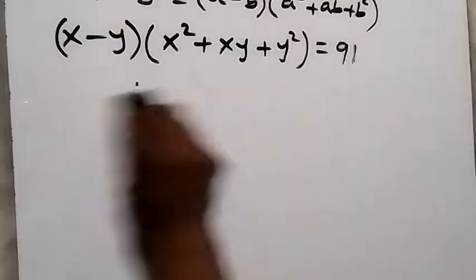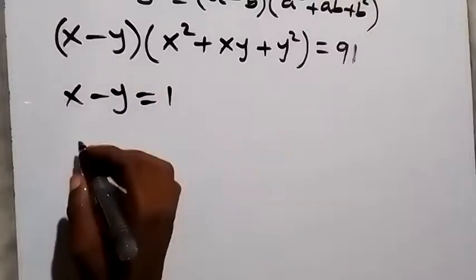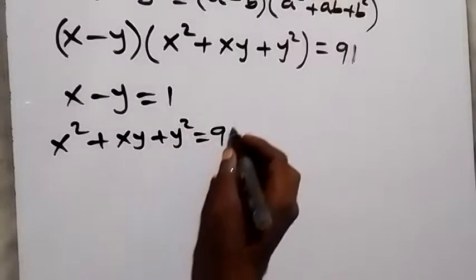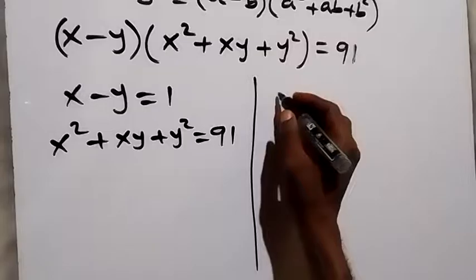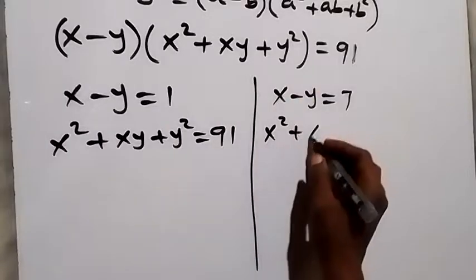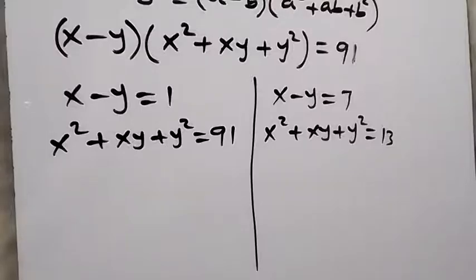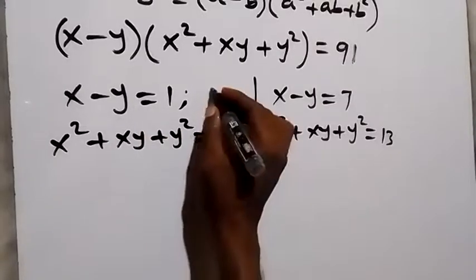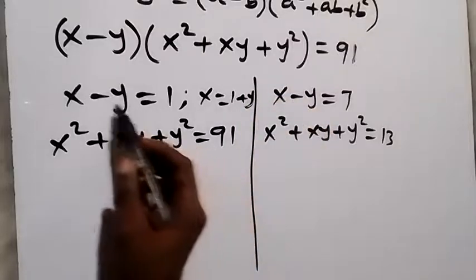From here we equate: x minus y equals 1, and x squared plus xy plus y squared equals 91. Solving from the first equation, we can write x equals 1 plus y.